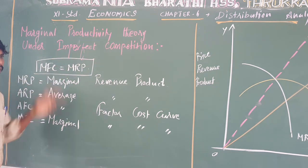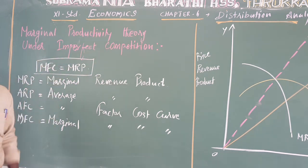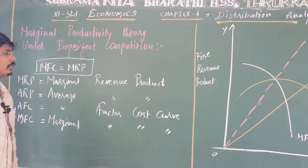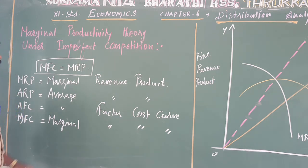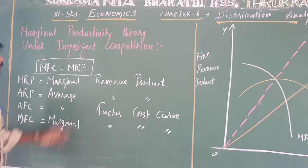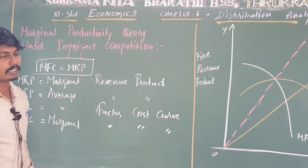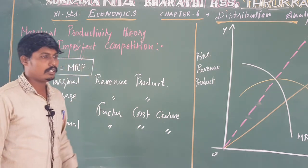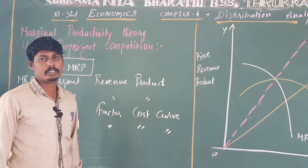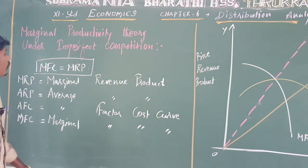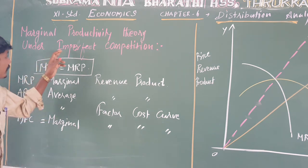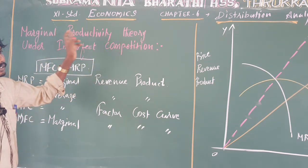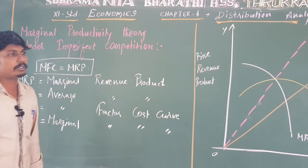The marginal productivity theory is classified into two categories: the first one is perfect competition, and the second one is imperfect competition. In the last video, we discussed perfect competition. Today, we are going to discuss the topic of imperfect competition under the marginal productivity theory.